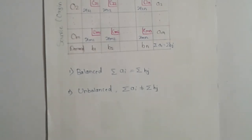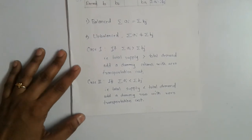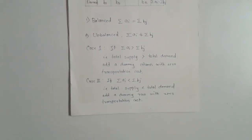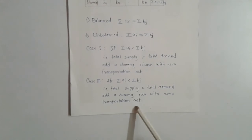Now there are two cases. First case: if total supply is greater than total demand, then add a dummy column with zero transportation cost. Second case: if total supply is less than total demand, then add a dummy row with zero transportation cost.